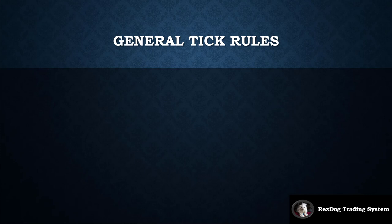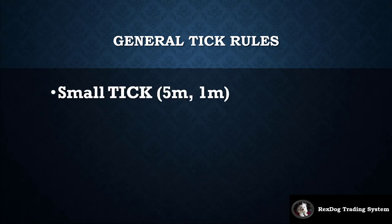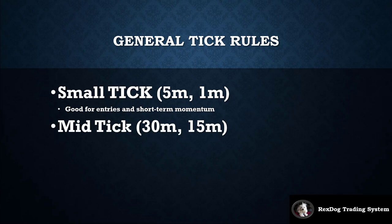Now let's talk about the general tick rules. You have the small tick — relatable to the 5-minute or 1-minute chart — which is good for entries and short-term momentum. If you're doing quick scalps, the small tick chart is one you'll reference a lot. Then you have the mid tick, relatable to the 15-minute or 30-minute chart. It reveals short-term market structure and shows how momentum is building.